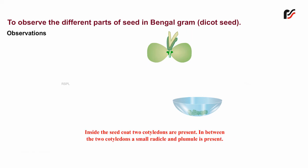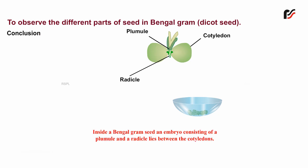Observation: Inside the seed coat, two cotyledons are present. Between the two cotyledons, a small radicle and plumule is present. Conclusion: Inside a Bengal gram seed, an embryo consisting of a plumule and a radicle lies between the cotyledons.